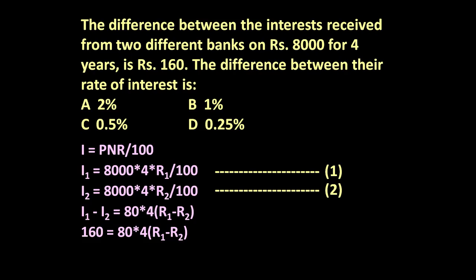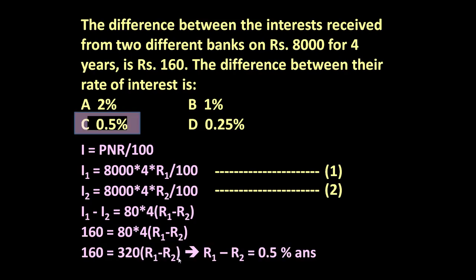Simplifying, 160 = 320 × (R1 − R2), which gives R1 − R2 = 0.5 percent. This is the answer — the difference between their rates of interest is 0.5 percent.